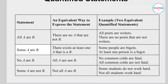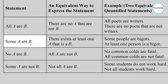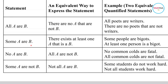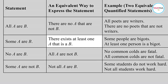Now consider the statement 'Some A are B,' where A and B are words or statements. An equivalent expression for this is 'There exists at least one A that is a B.' For example, the statement 'Some people are bigots' is equivalent to 'At least one person is a bigot.'